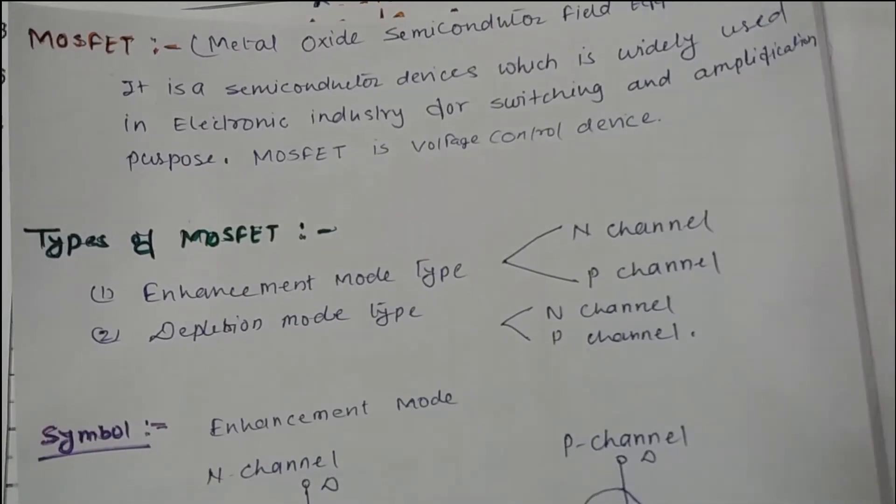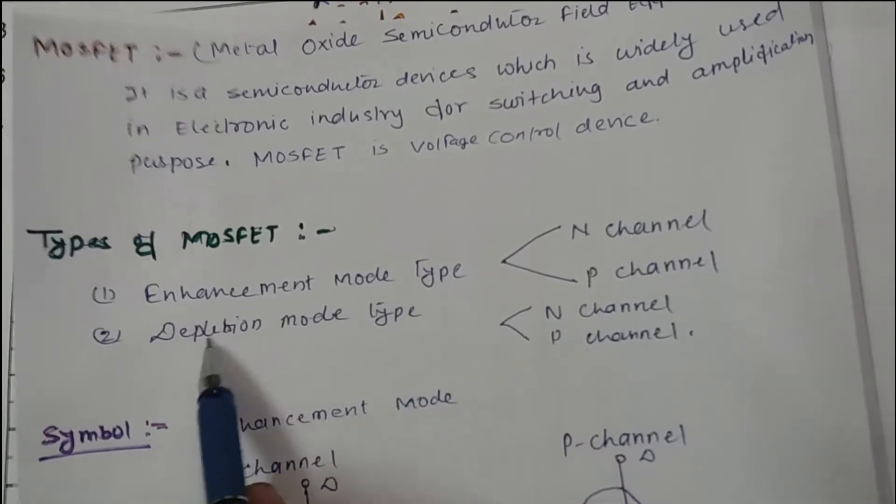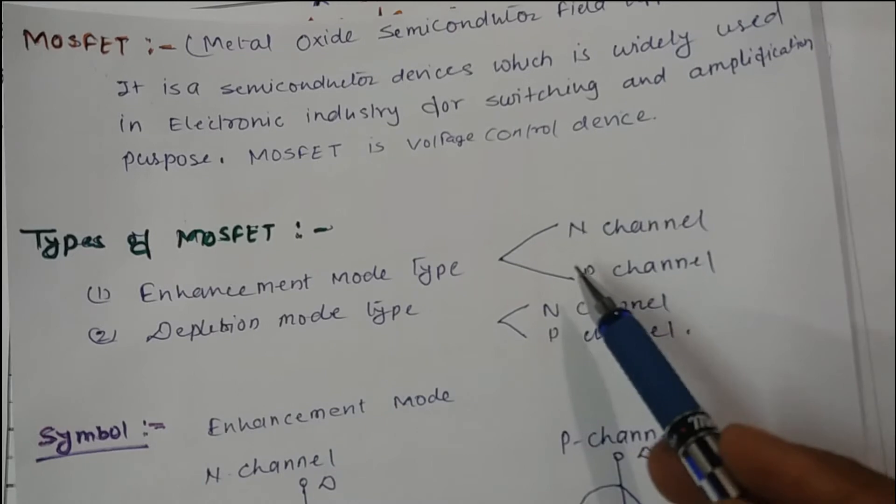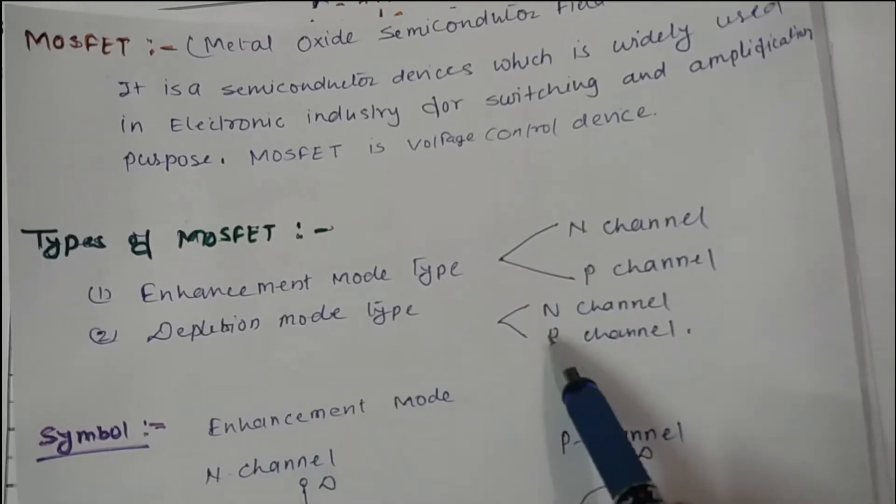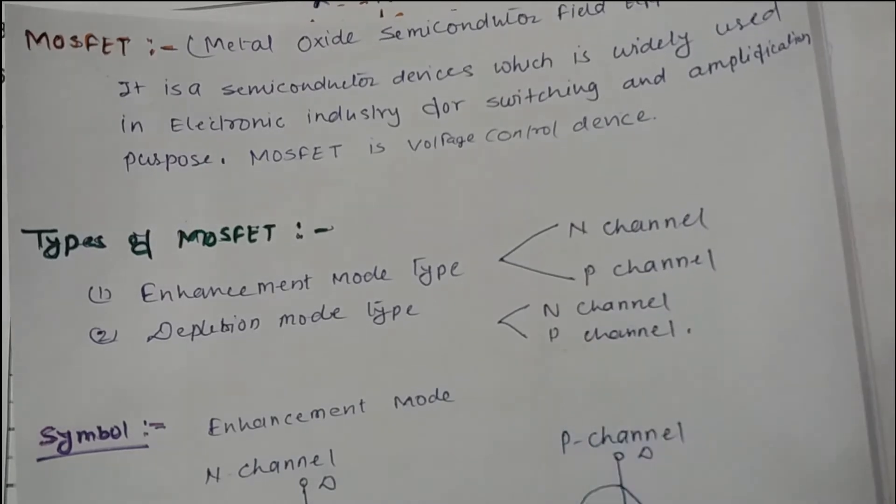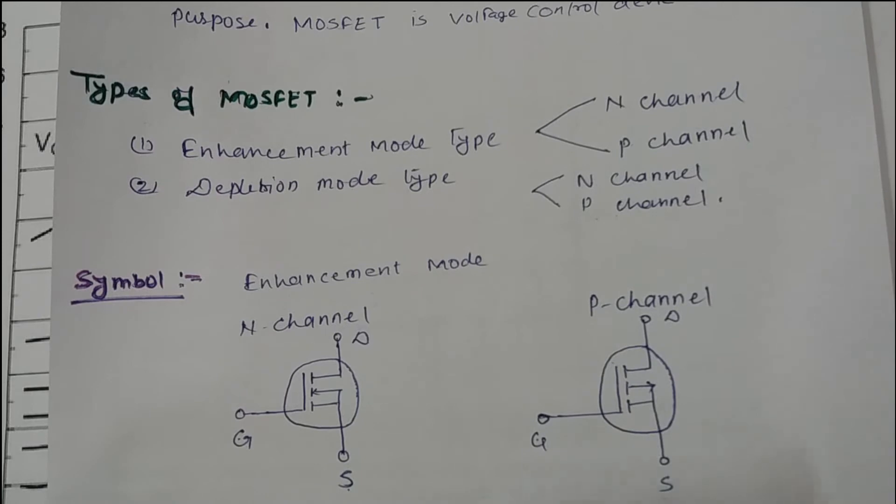Types of MOSFET - there are two types of MOSFET available in the market: enhancement mode type and depletion mode type. In enhancement mode, again two types: N-channel and P-channel. Depletion mode, again two types: N-channel and P-channel.